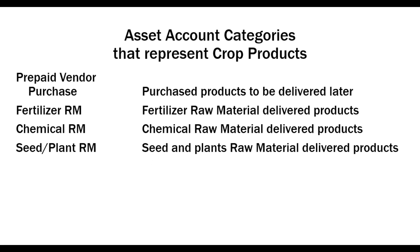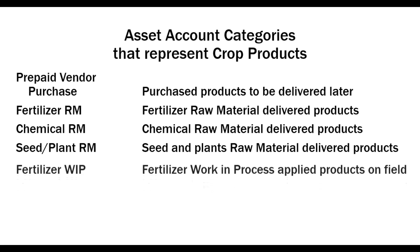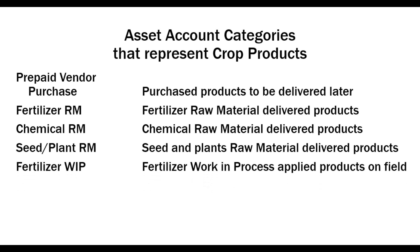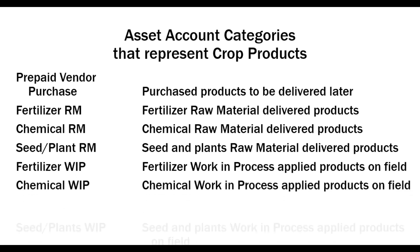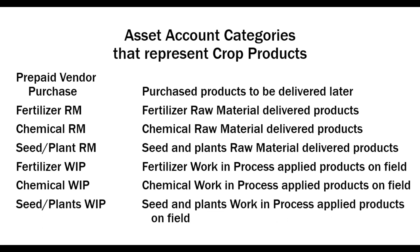Once the products have been delivered and it's time to apply them to the fields, they're going to be transferred from a raw material account to a work in process account. So you have your fertilizer work in process, chemical work in process, and seed and plant work in process — all representing applied products on the field.